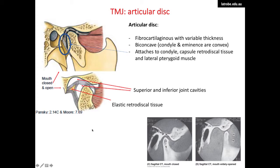In this sagittal section of the temporomandibular joint, we can see the head of the mandible articulating with the mandibular fossa and the mandibular eminence. In between these articular surfaces, we can see the articular disc, and like most synovial joints, its articular compartments are fibrocartilaginous with variable thickness. The articular disc divides the superior and inferior joint cavities, as seen when the mouth is opened in this image and also in the CT scan at the bottom.